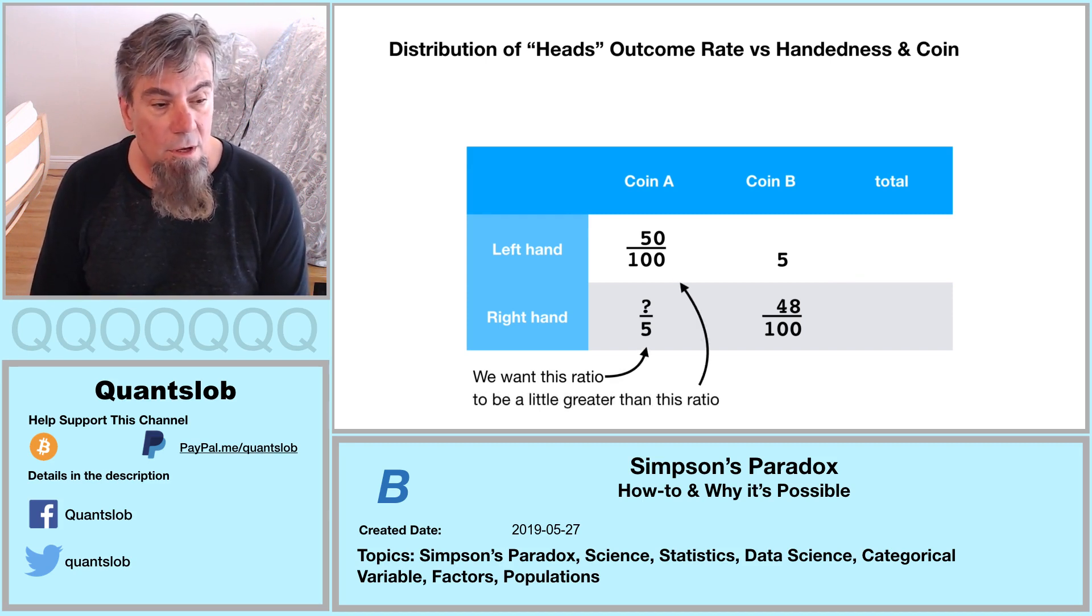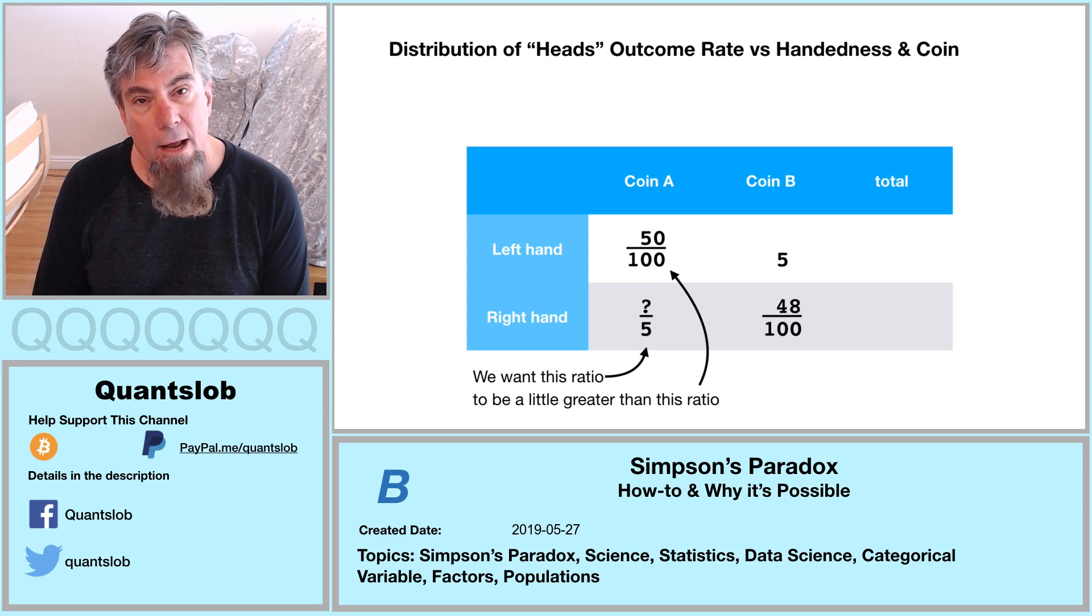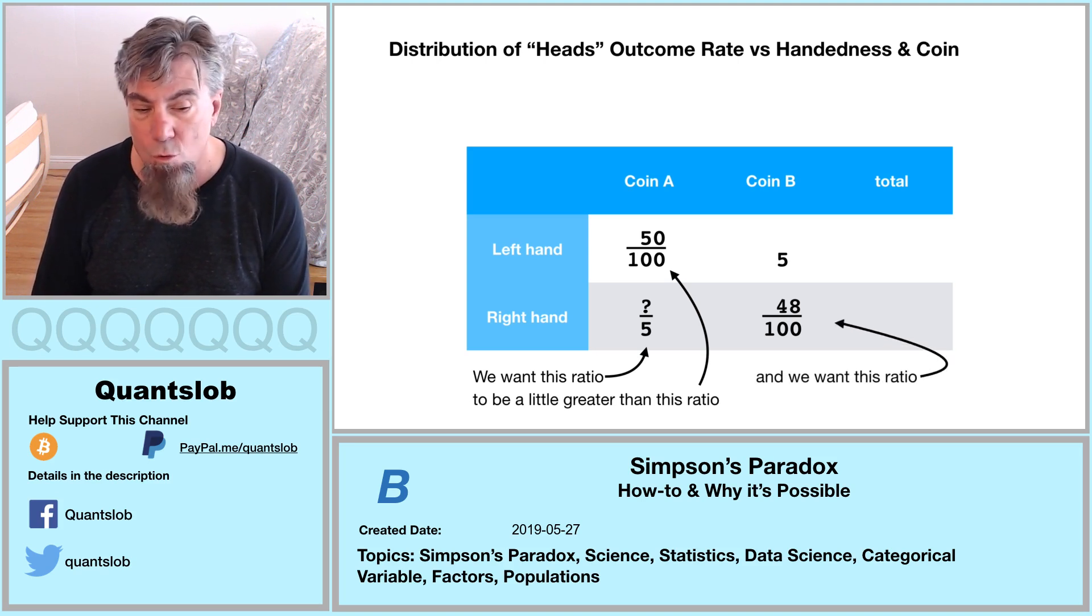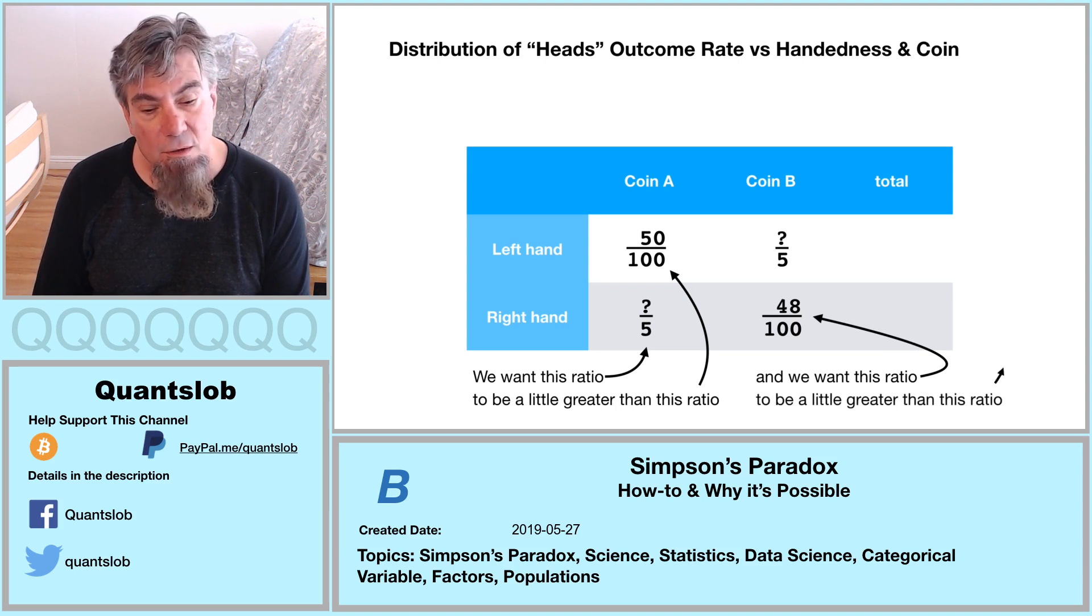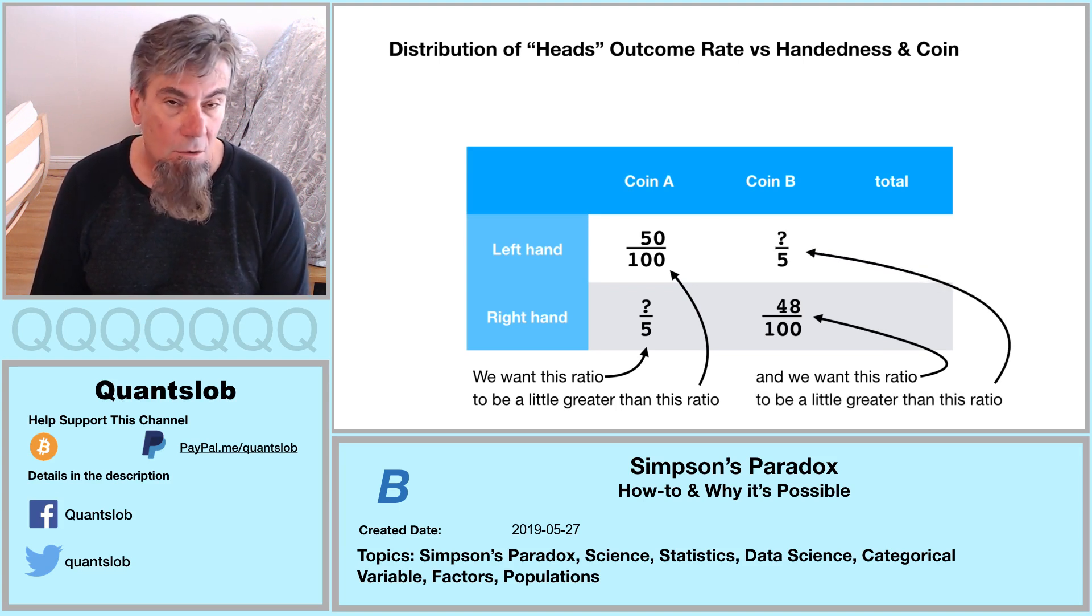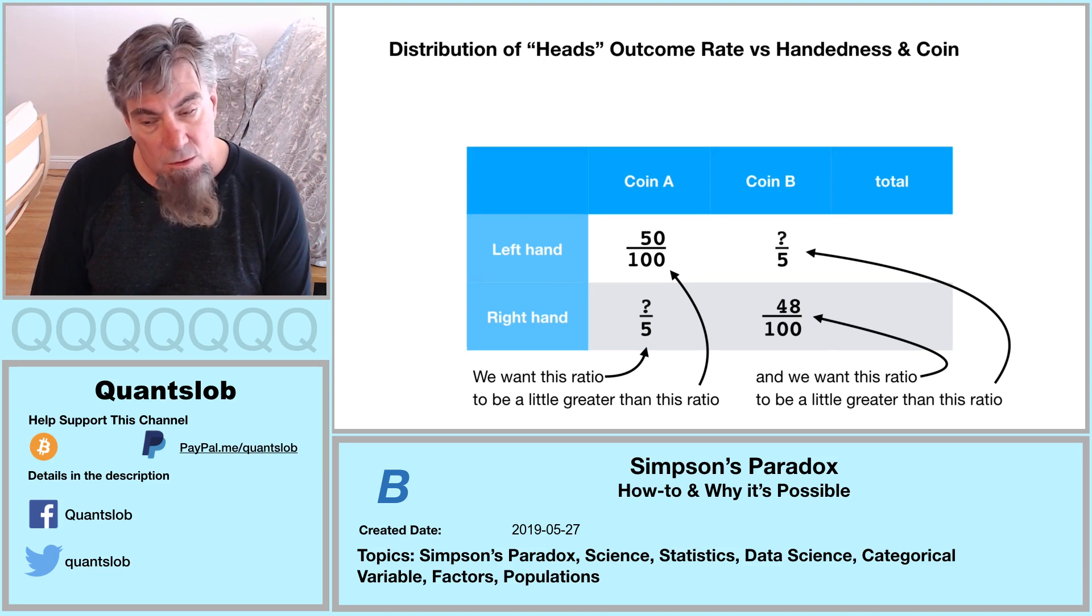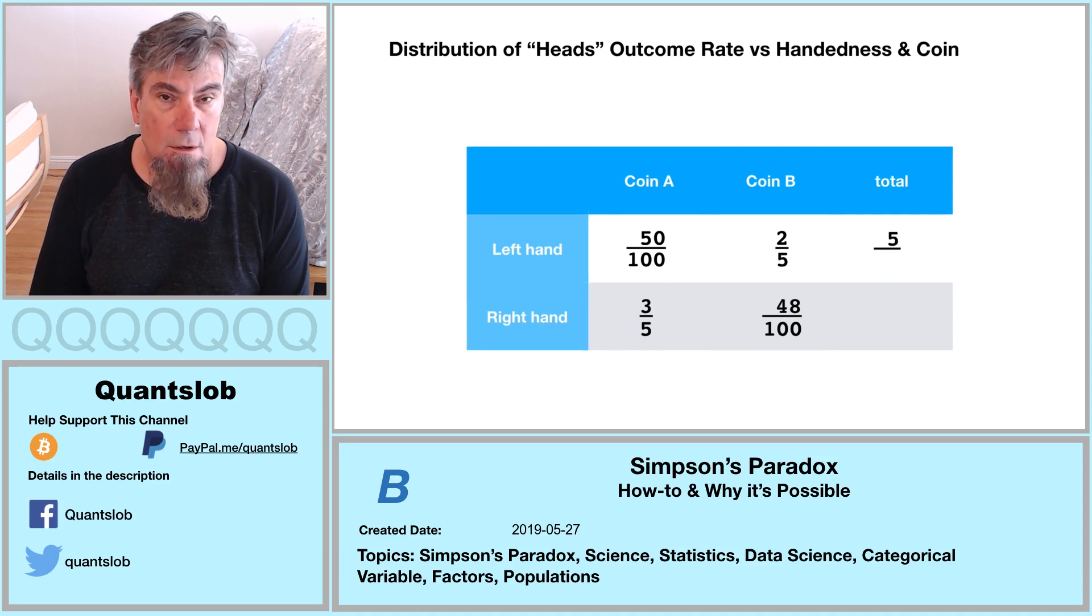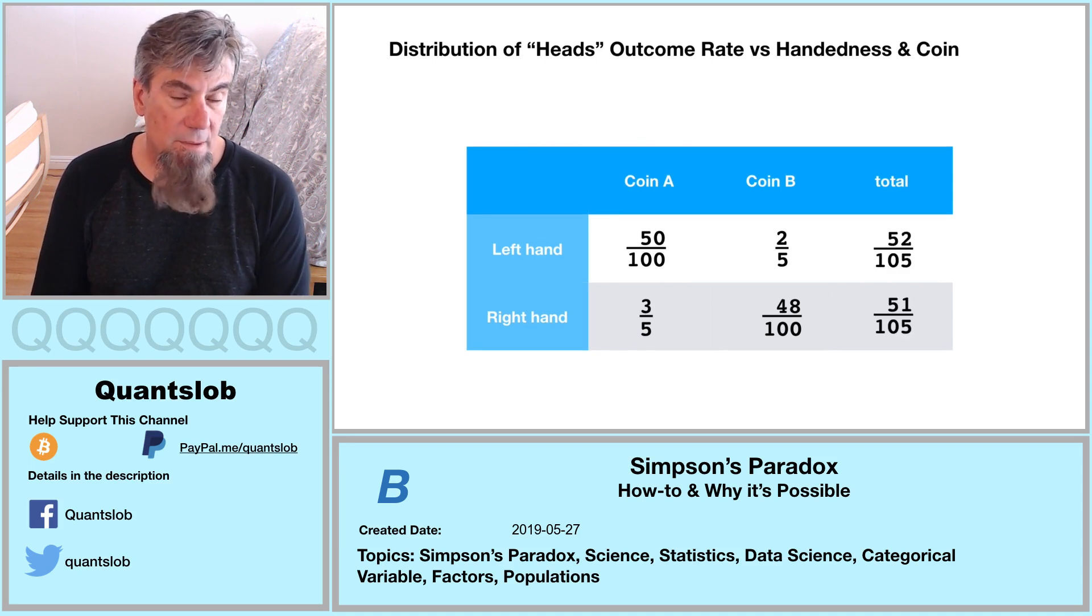For coin A now, what we're looking for here is a numerator that makes the right hand proportion of heads a little greater than that of the left hand. For coin B, we want a numerator that makes the left hand proportion of heads a little less than that of the right hand. So here we go. Three fifths and two fifths does the trick, respectively. It completes the paradox.